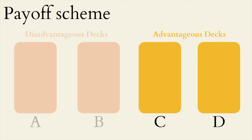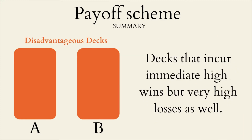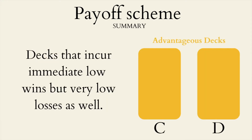To quickly summarize the payoff scheme: the disadvantageous decks in the IGT — decks A and B — incur immediate high wins and rewards, but also very high losses. On the other hand, the advantageous decks — decks C and D — incur immediate low wins, but very low losses as well.